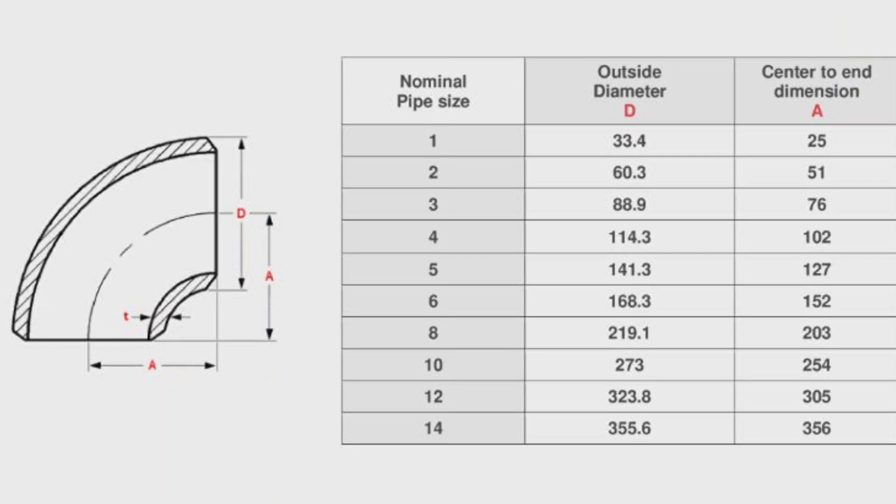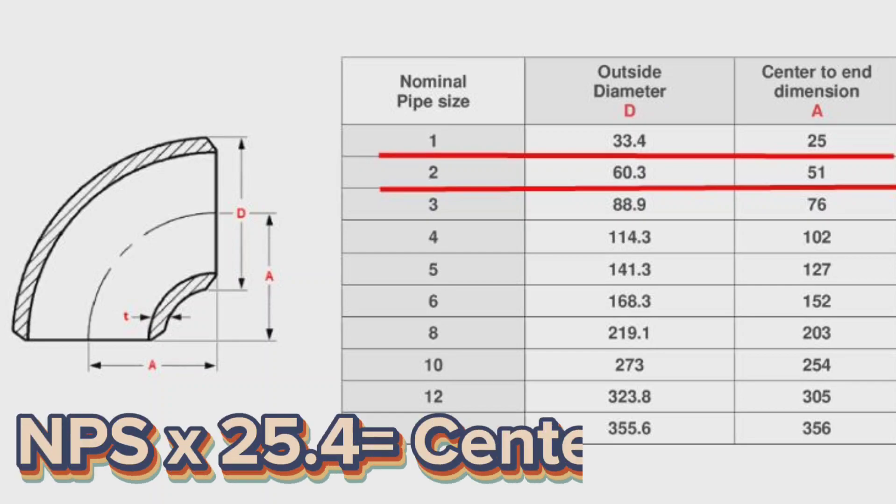For example, 1 inch elbow size is 25 mm. 2 inch elbow size is 51 mm. Here we saw that, to find the size of short radius elbows, you need to multiply the nominal pipe size of the elbow by 25.4. So, NPS times 25.4 equals the size of the elbow.